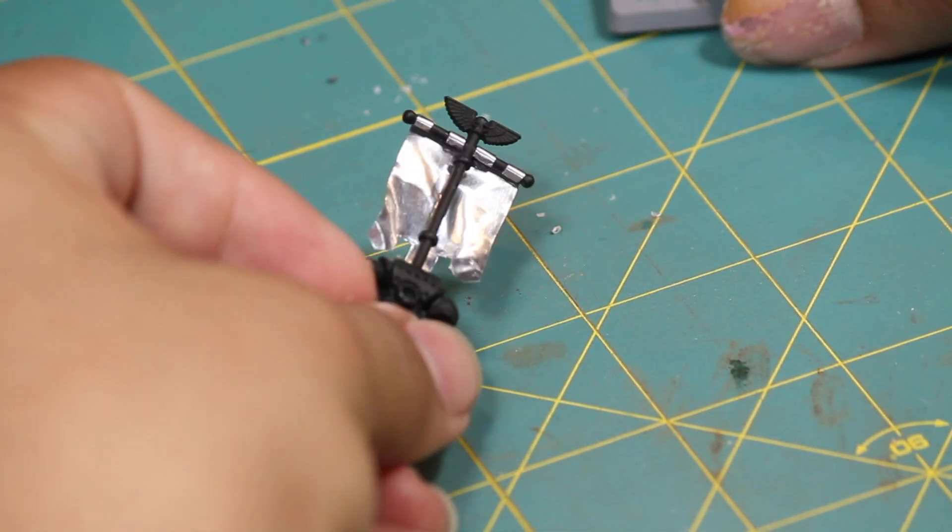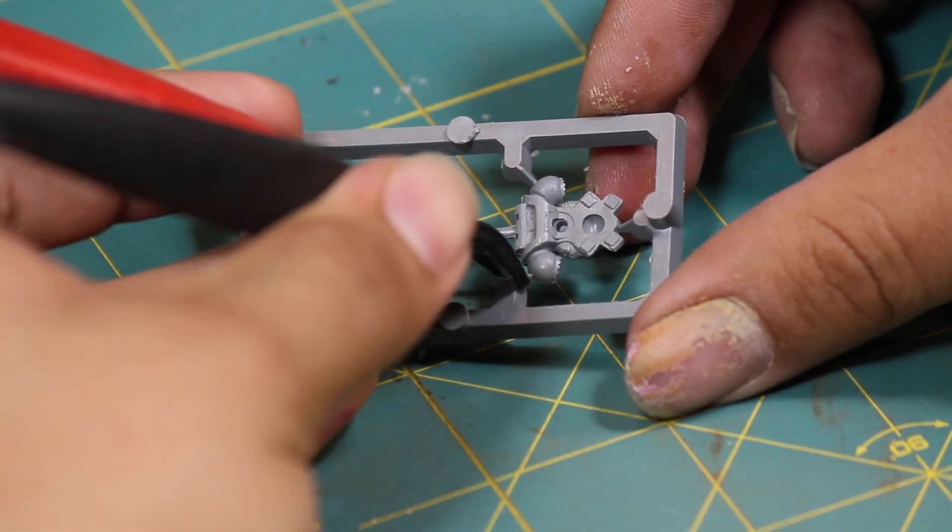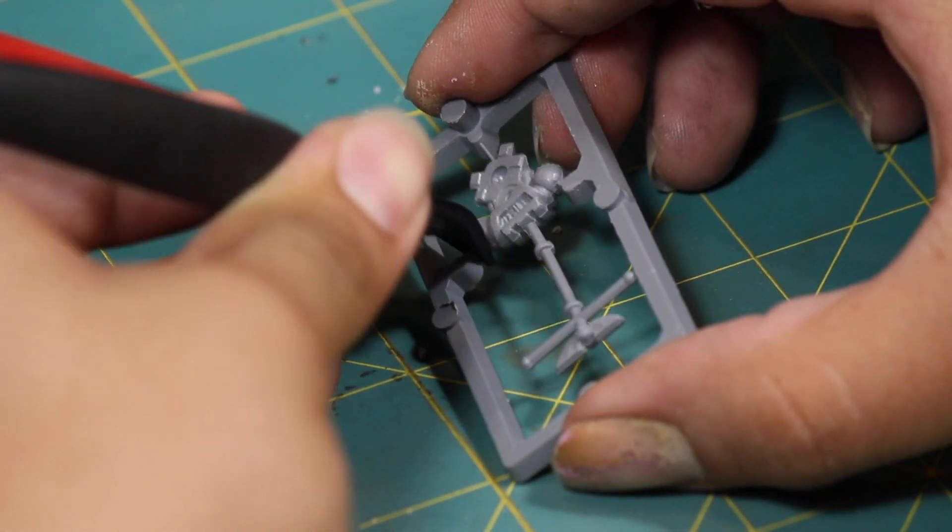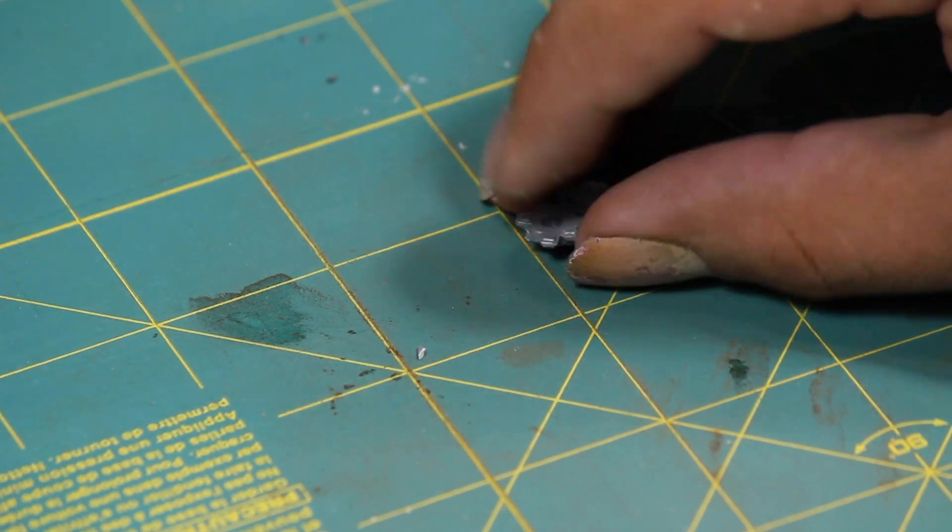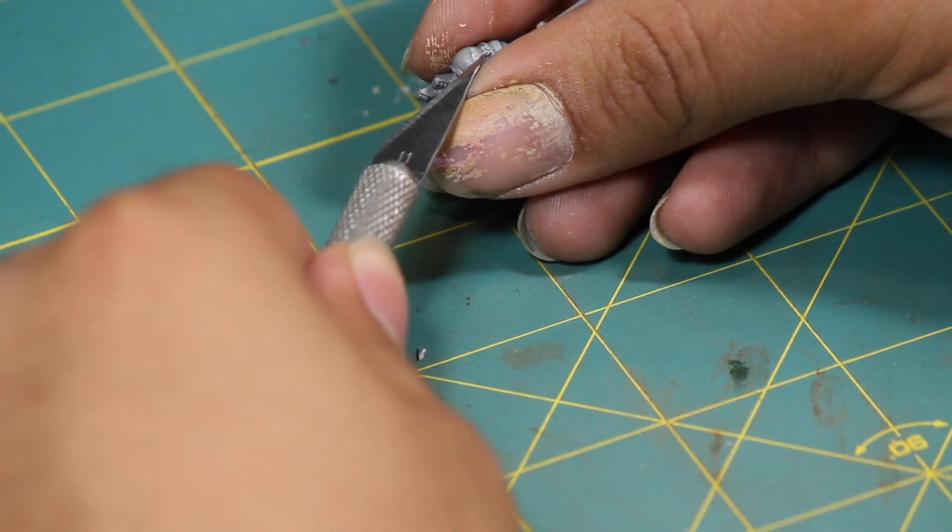The first step is to get the model off of the sprue. Now with these old models with the banner, it's a very fragile piece. If you're getting it secondhand, it's probably already broken off.